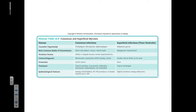So we have our cutaneous infections that are lumped together and called ringworm, which focus primarily on fungi that eat our keratin. And then we have our superficial infections, which also cause discoloration and can be diagnosed with potassium hydroxide.